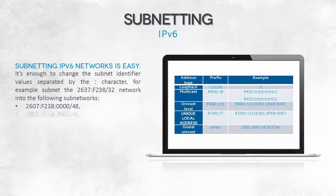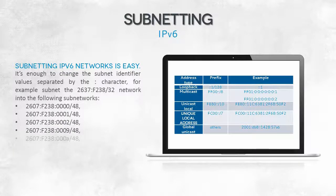Subnetting in IPv6 is much simpler than in IPv4, where sometimes it is necessary to convert numbers from decimal to binary. In this case, there are 64 bits on the left side — these are the network address. 48 bits can be omitted because they represent the main network address. The other 16 bits can be divided into subnets.